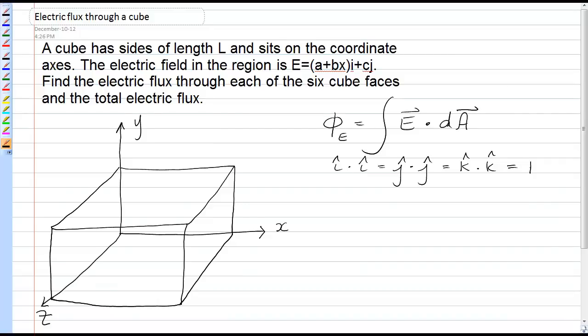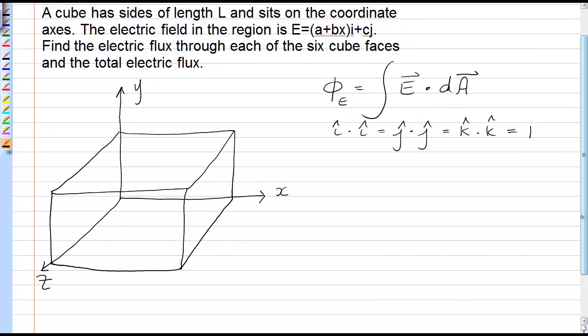So the first thing to do is draw all the area vectors for this cube and then decide whether or not you're going to have to integrate to get the electric flux. So let's start at the top. The area vector for this top face I'll call A1 and it has dimensions L squared and points in the j-hat direction.